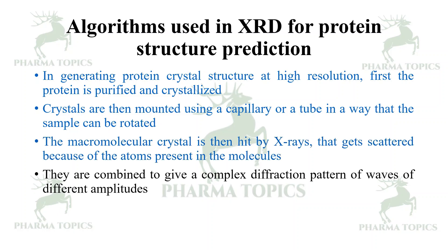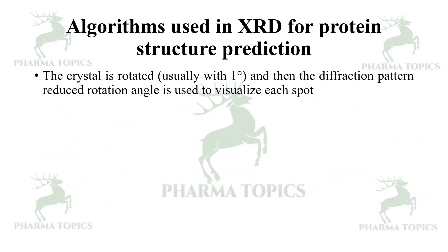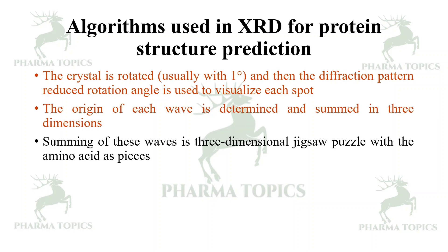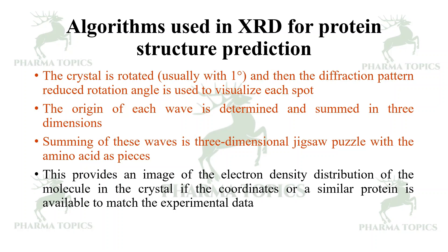The scattered waves are combined to give a complex diffraction pattern of waves of different amplitudes. The crystal is rotated, usually by one degree at a time, and the diffraction pattern at each rotational angle is used to visualize each spot. The origin of each wave is determined and summed in three dimensions — a three-dimensional jigsaw puzzle with amino acids as pieces — providing an image of the electron density distribution of the molecule.